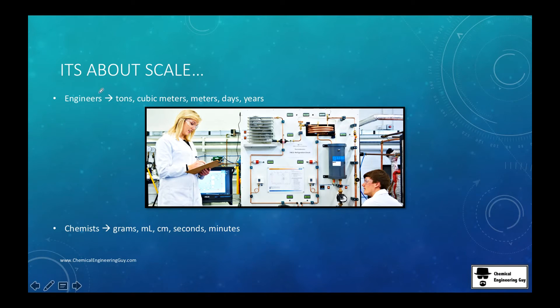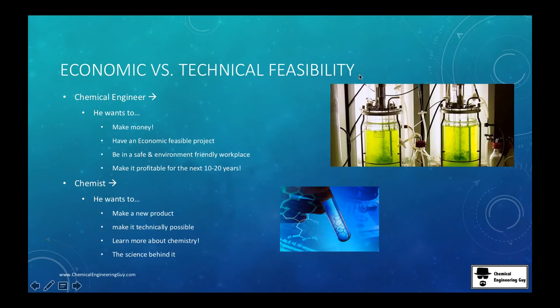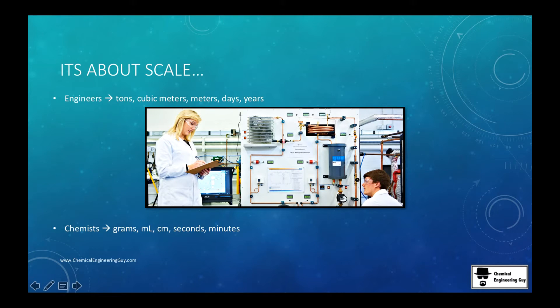For instance, an engineer will be more interested in tons, cubic meters, meters, days, years, whatever unit you can imagine of huge amounts. The chemist is interested in very small amounts such as grams, micrograms, milliliters, centimeters, seconds or even minutes. So you can say these guys are in the large scale and these guys are in the low scale. And of course they can go even lower to nanotechnology, microbiology and all that.